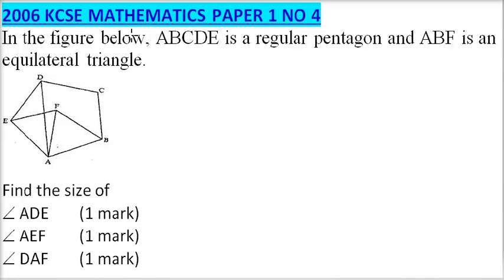This is 2006, paper number 4. We are told in the figure below, ABCD is a regular pentagon and ABF is an equilateral triangle. So we have our figure there.